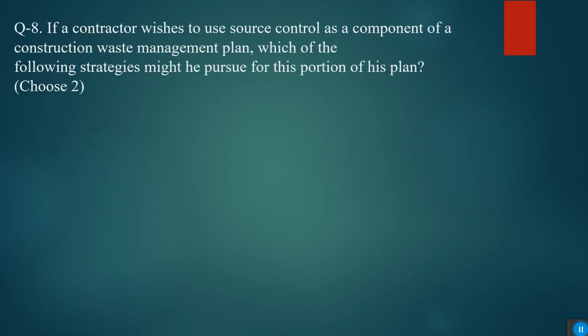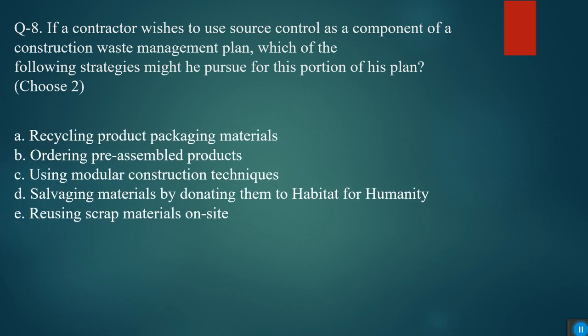Next question: if a contractor wishes to use source control as a component of a construction waste management plan, which of the following strategies might he pursue? Options are recycling product packaging materials, ordering pre-assembled products, using modular construction techniques, salvaging materials by donating them to Habitat for Humanity, and reusing scrap materials on site. The answers are ordering pre-assembled products and using modular construction techniques.